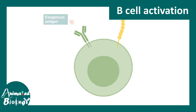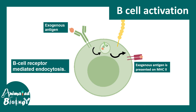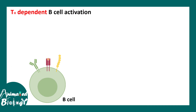B-cell activation starts with the interaction with exogenous antigen, and this interaction happens via the membrane bound antibody molecule on the B-cell. B-cell receptor mediated endocytosis leads to the first step: the presentation of the antigen on class 2 MHC molecule. B-cells are also professional antigen presenters, so they can display substances on class 2 MHC.